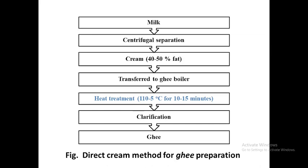For ghee preparation, two important operations are fat concentration and heat treatment — both are essential. We take milk, perform centrifugal separation to obtain cream. This cream can reach 70–80% fat, but generally we get 40–50%. For ghee making, they typically go for 50–60% fat. This cream is then transferred to a ghee boiler, where the heat treatment takes place.